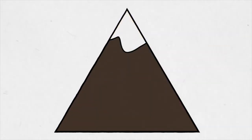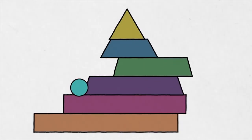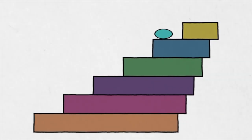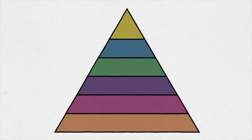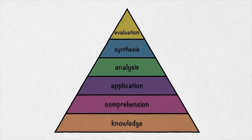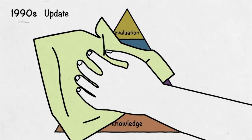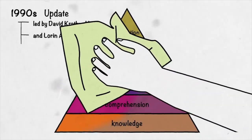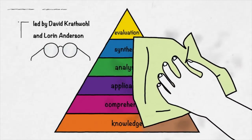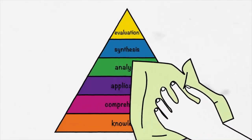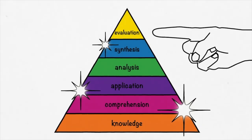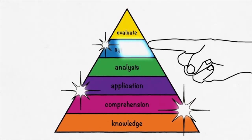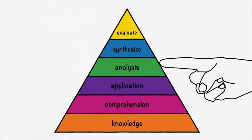Some have likened the model to a mountain or a stairway where teachers set learning objectives and design learning experiences to guide students to higher levels of thinking. The taxonomy has become an important model for structuring students' learning processes. In the 1990s, Bloom's Taxonomy was updated by a group led by David Krathwahl, one of the original authors, and Lauren Anderson, a former student of Bloom's, to make the model relevant to 21st century learning.